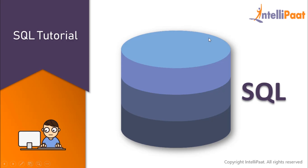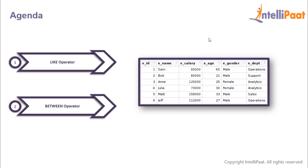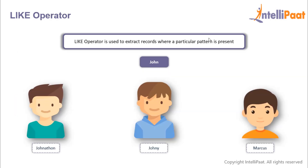Welcome back to this SQL tutorial series. In this session we learn how to extract records with the LIKE and BETWEEN operators. We'll start with the LIKE operator, which is used to extract those records from a table where a particular pattern is present. For example, we want to extract all those records where the person's name includes 'John'.